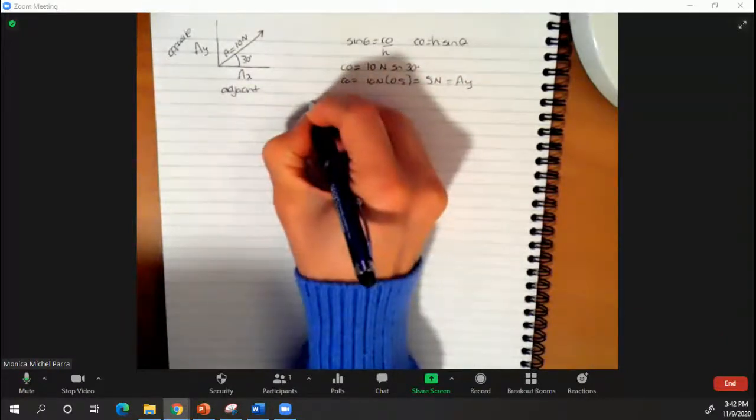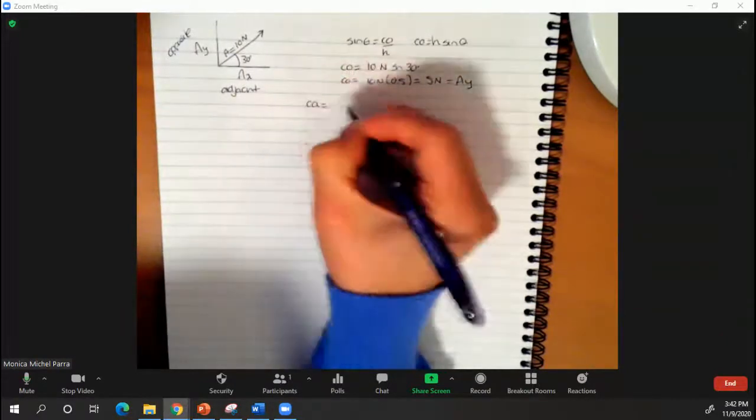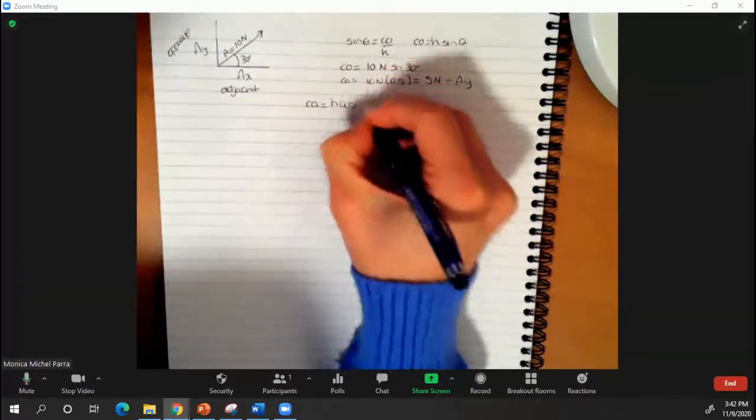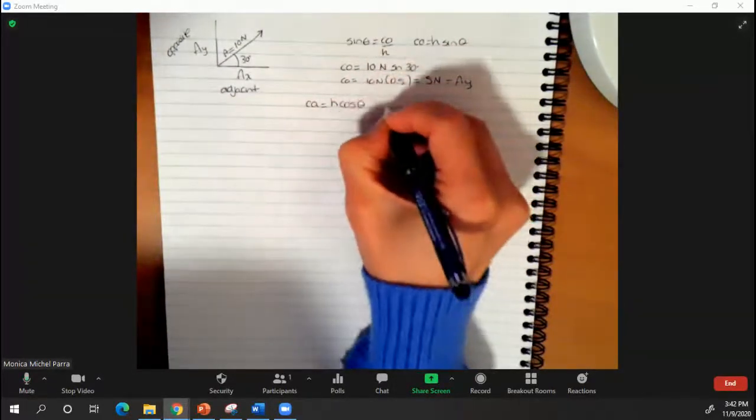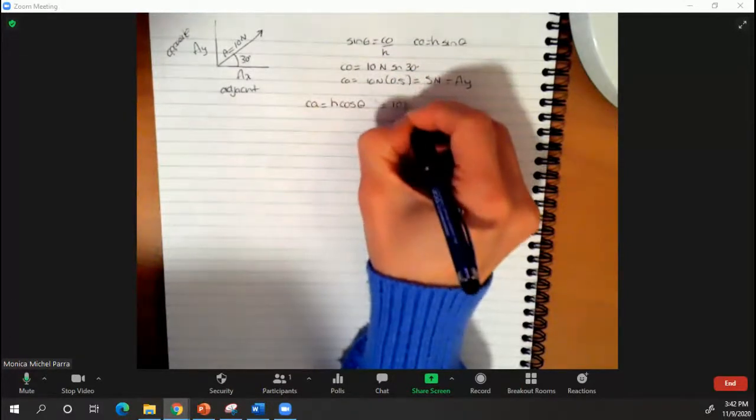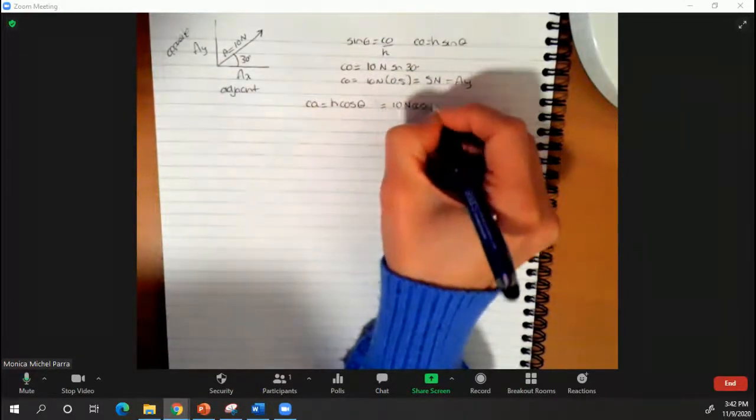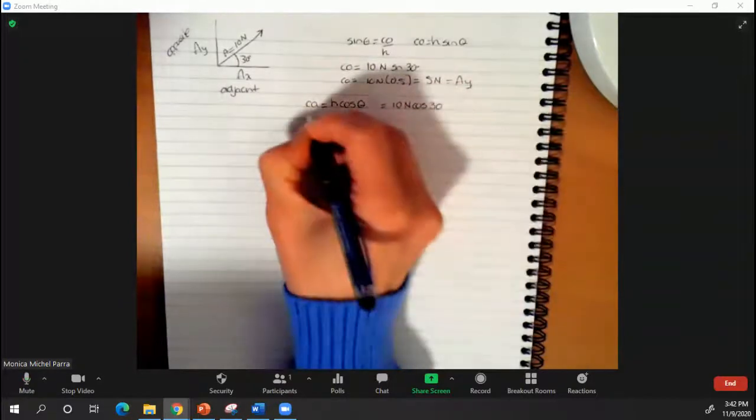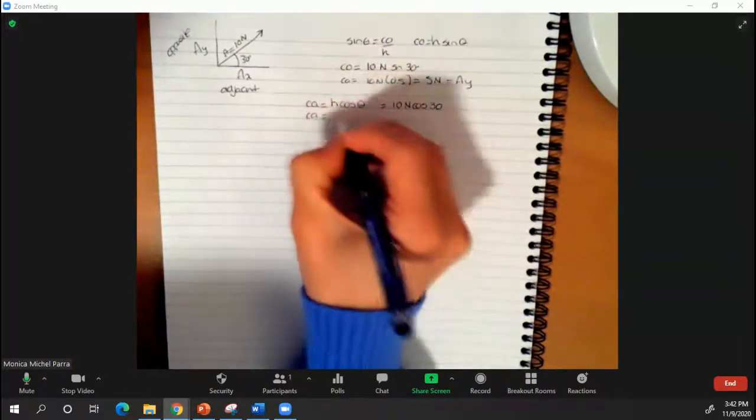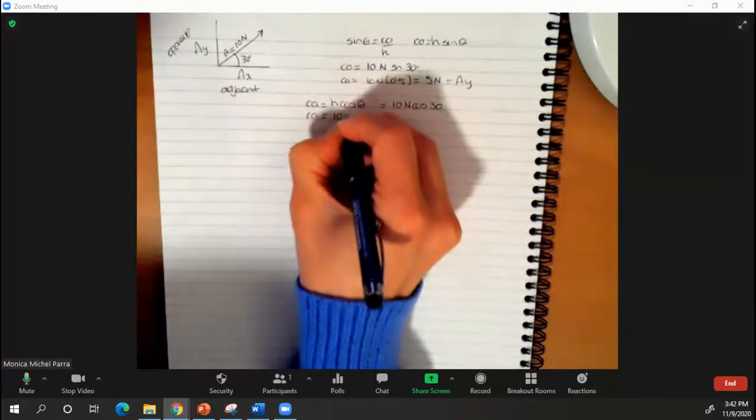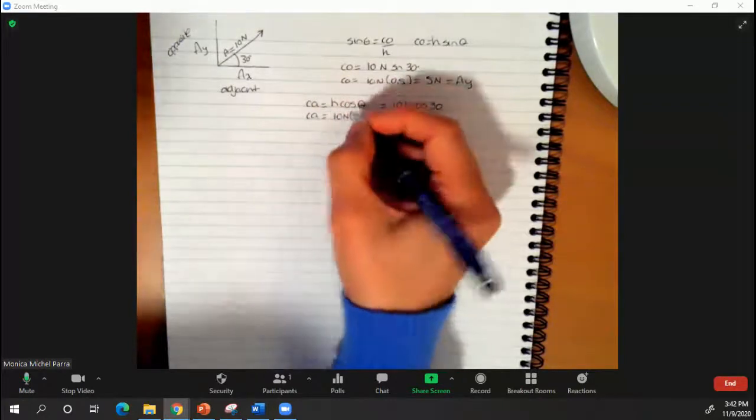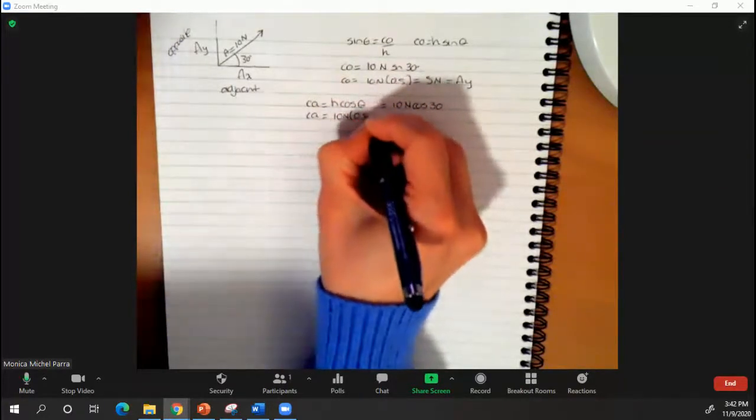In order to calculate the adjacent or the value for x, the adjacent is going to be equal to the hypotenuse times the cosine of the angle. This means it's going to be 10 newtons times the cosine of 30 degrees. The cosine of 30 degrees is 0.866, so 10 newtons multiplied by 0.866 gives us an answer of 8.66 newtons.